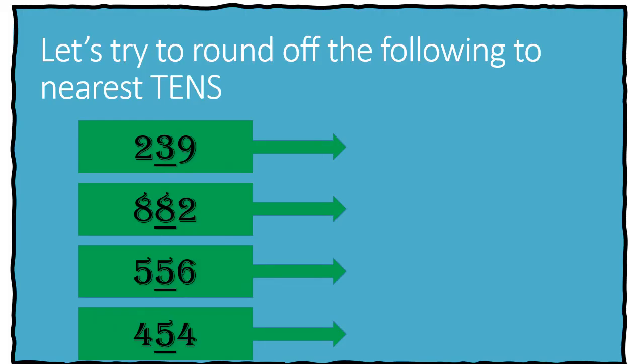Let us try to round off the following to the nearest tens. Can you help me? Let us start. The first one is 239. Round off to the nearest tens. We have 240. Next.